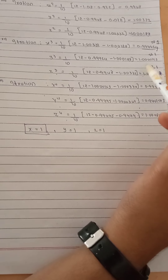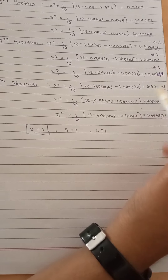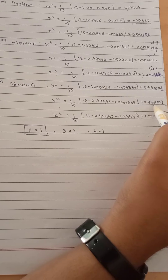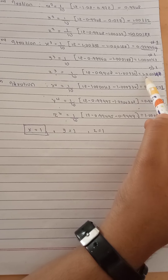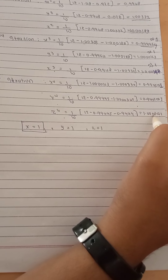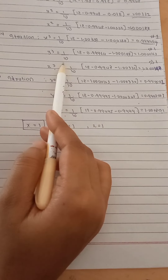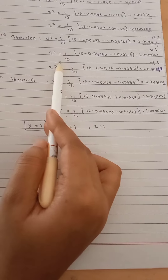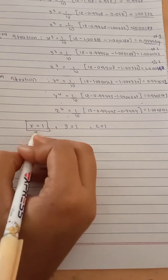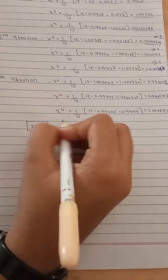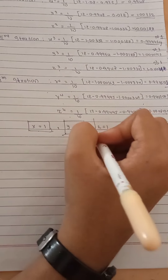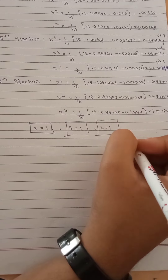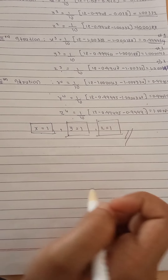Comparing the third and fourth approximations, x ≈ 0.9995 ≈ 1, y ≈ 1.00163 ≈ 1, and z ≈ 1.003 ≈ 1. Therefore, comparing the third and fourth approximations, we finally get x = 1, y = 1, and z = 1. Thank you for watching the video.